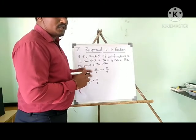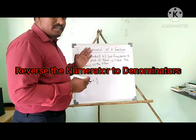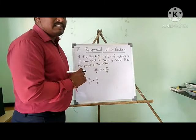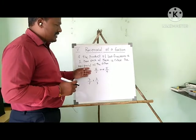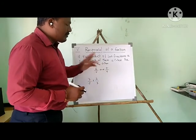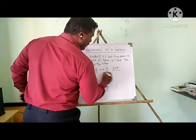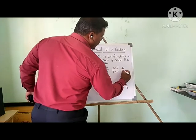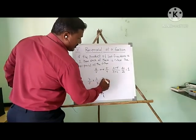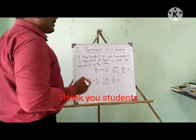Now we are going to talk about reciprocal fractions. What is a reciprocal fraction? If the product of two fractions is 1, then each of them is called the reciprocal of the other. For example, 4/5 and 5/4 — we just reverse the numerator and denominator. If you multiply: 4 × 5 divided by 5 × 4 = 20/20 = 1. Another example: 7/2 × 2/7 = 14/14 = 1. This kind of fraction is called a reciprocal fraction.